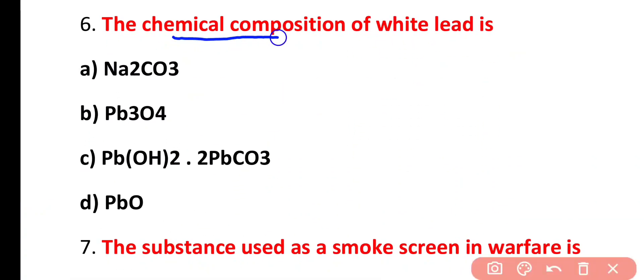The chemical composition of white lead is Na2CO3, PB3O4, PBOH2.2PBCO3, PBO. Correct answer is option C. White lead consists of lead hydroxide and lead carbonate. Similarly, PB3O4 is a formula of red lead.